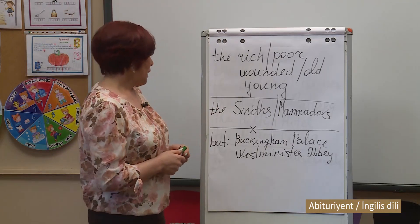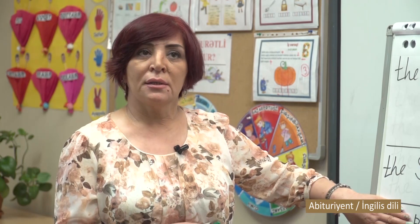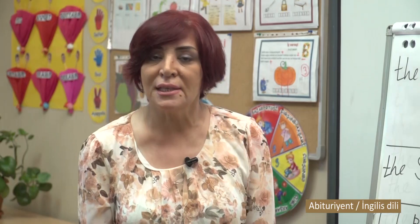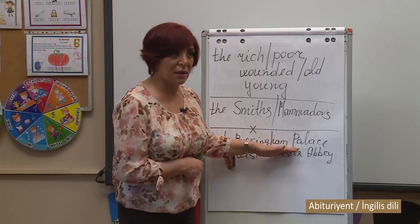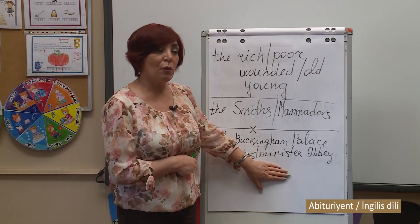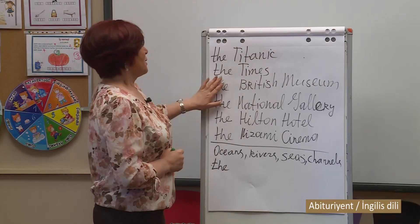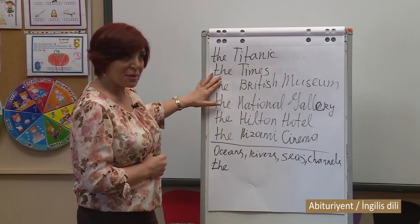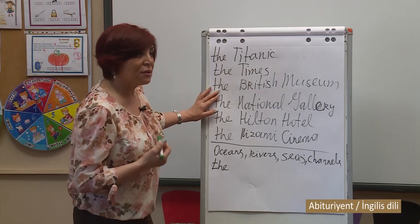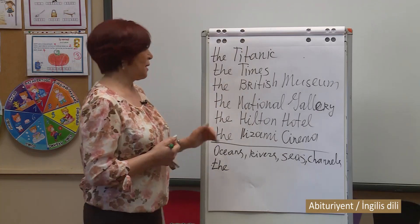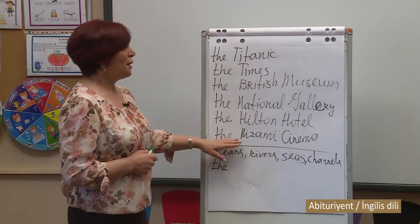With historical buildings, we use the definite article: 'the Maiden Tower,' 'the Eiffel Tower,' 'the Tower of London.' But there are exceptions — we say 'Buckingham Palace,' not 'the Buckingham Palace,' and 'Westminster Abbey,' not 'the Westminster Abbey.' With the names of ships: 'the Titanic.' With newspaper and journal names: 'The Times.' With the names of museums, galleries, cinemas, and theatres: 'the British Museum,' 'the National Gallery,' 'the History Museum,' 'the Art Museum,' 'the Hilton Hotel,' 'the Nizami Cinema.'